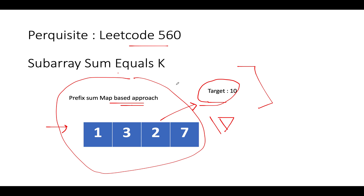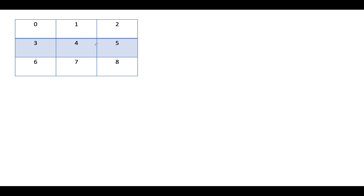Now it's time to apply the same algorithm over to a 2D matrix. The intent is clear: we need to identify the sum of each and every sub-matrix that exists in this entire 2D array. Once we have that sum value, we compare it to the given target. If both are equal, we increment the count; otherwise we skip it. If we can identify the sum of every sub-matrix, our work is done.